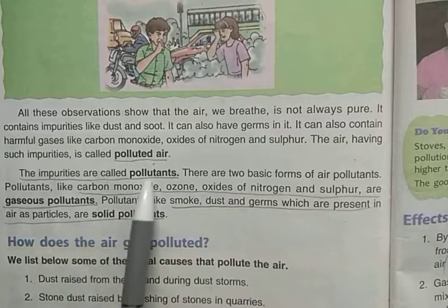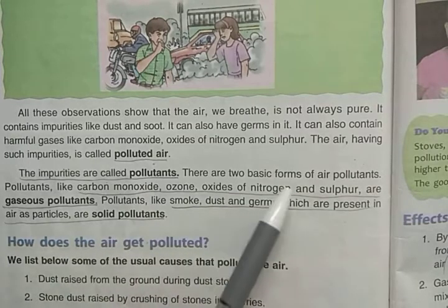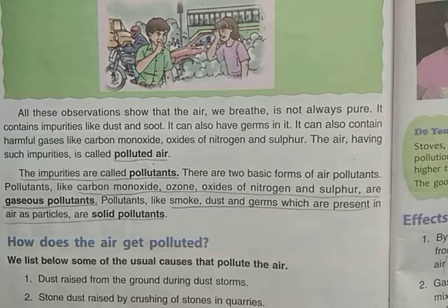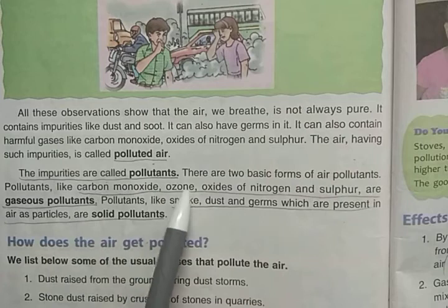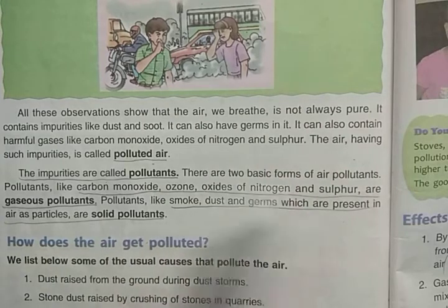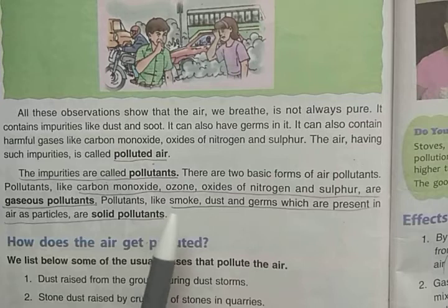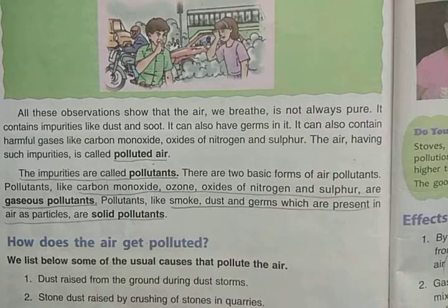The impurities present in polluted air are called pollutants. There are two basic forms of air pollutants: gaseous pollutants and solid pollutants. Examples of gaseous pollutants are carbon monoxide, ozone, oxides of nitrogen and sulfur. Examples of solid pollutants are smoke, dust, and germs, which are present in the air as particles.